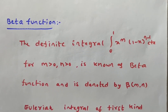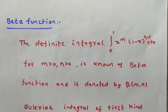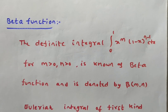In this video we are discussing definitions of Beta and Gamma functions. Beta function is a special function, and similarly Gamma is also a special function. Both Beta and Gamma are definite integrals. Beta function is also called the Eulerian integral of the first kind, and Gamma function is called the Eulerian integral of the second kind.